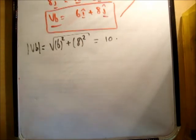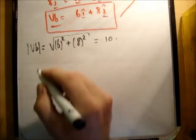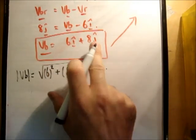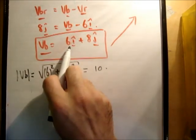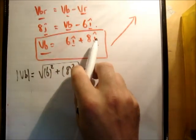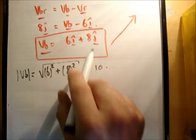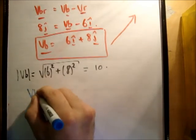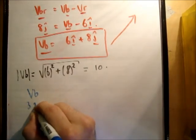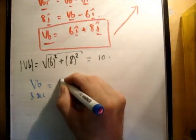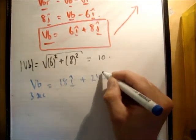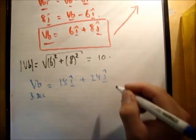Well, the easiest way to do this is say that we're moving 6i hat and 8j hat. So, after 3 seconds, we'll have moved 18i hat and 24j hat. Because we'll have moved 3 times that distance there. So, you can see that vb, after 3 seconds, is equal to 18i hat plus 24j hat. That's correct.